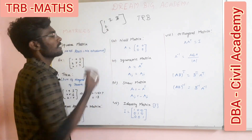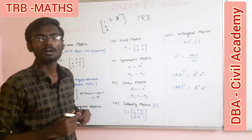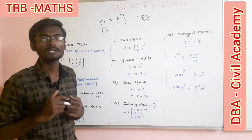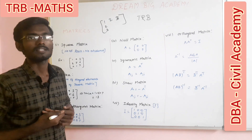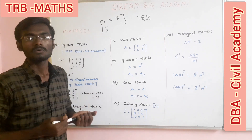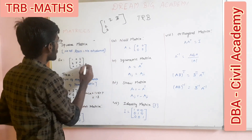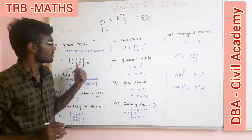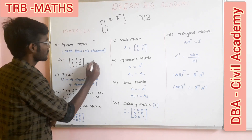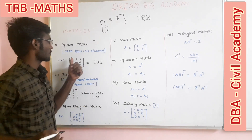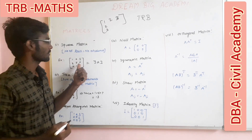Now, what is a square matrix? The number of columns and the number of rows are equal. Remember, in a square matrix, the number of rows and columns are equal. For example, we have a matrix written as 3x3 — 3 rows and 3 columns.